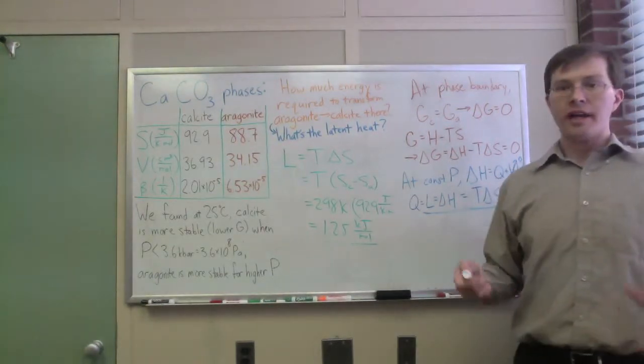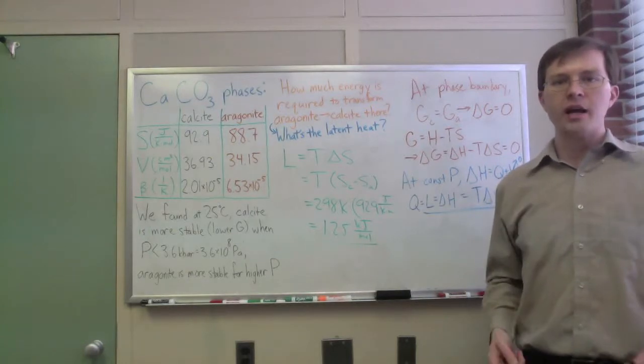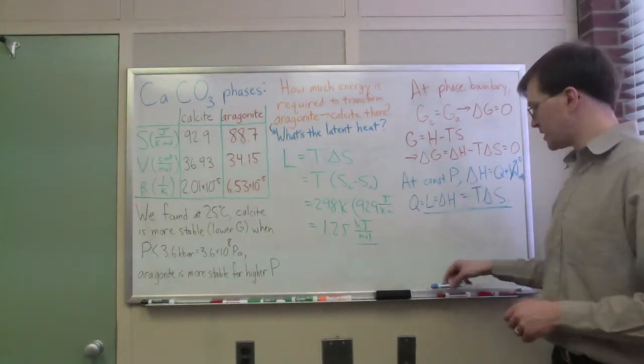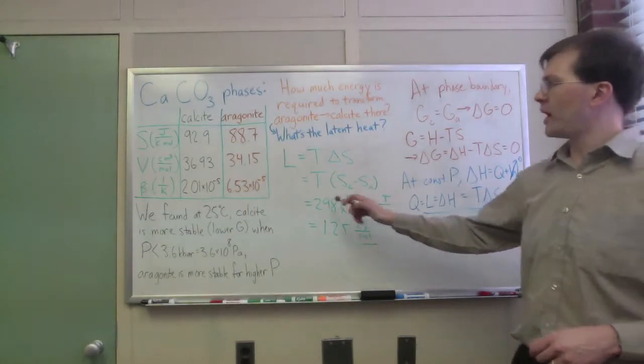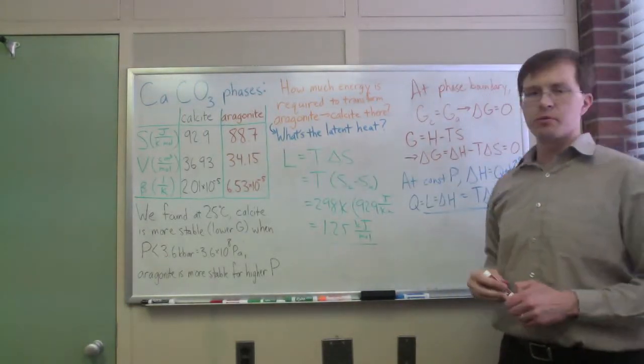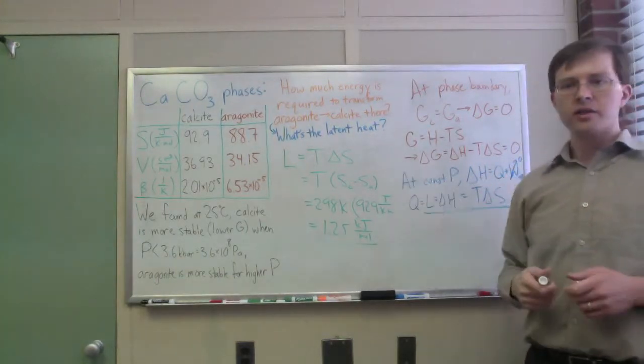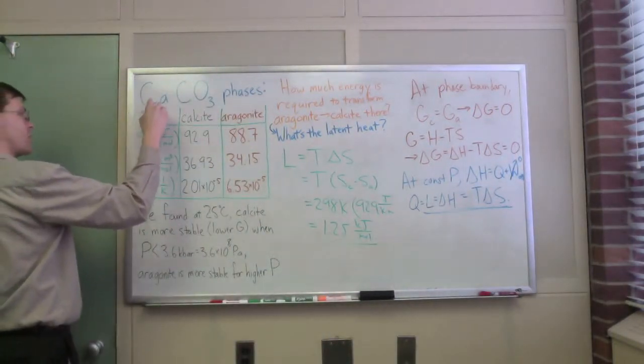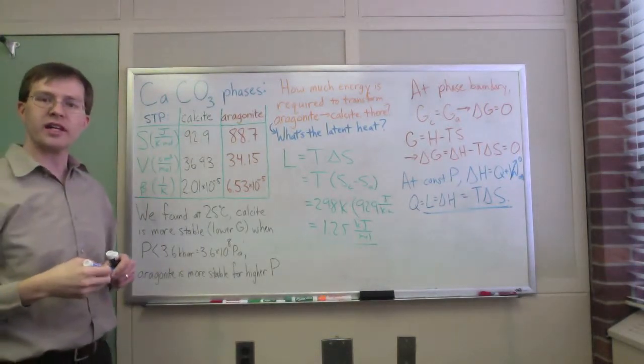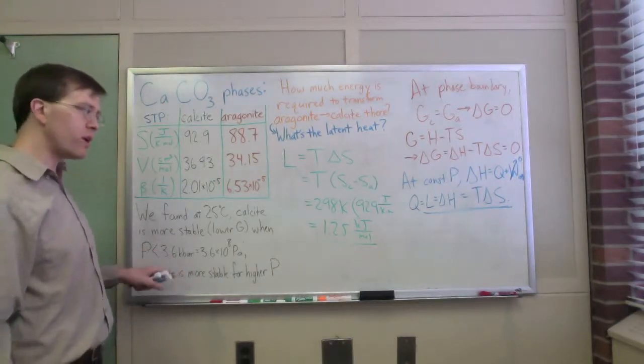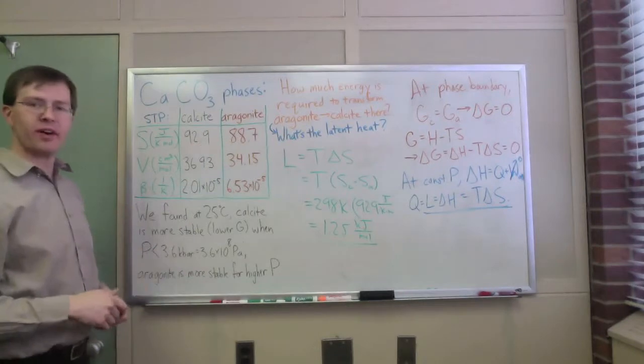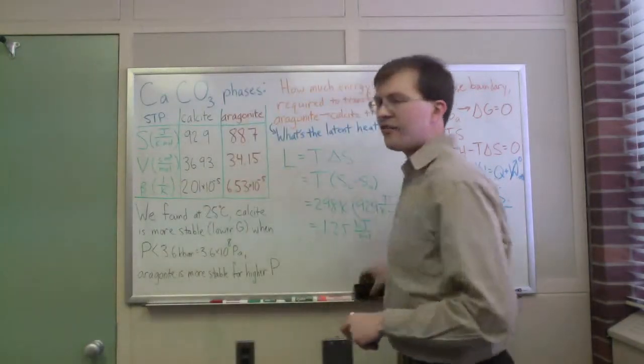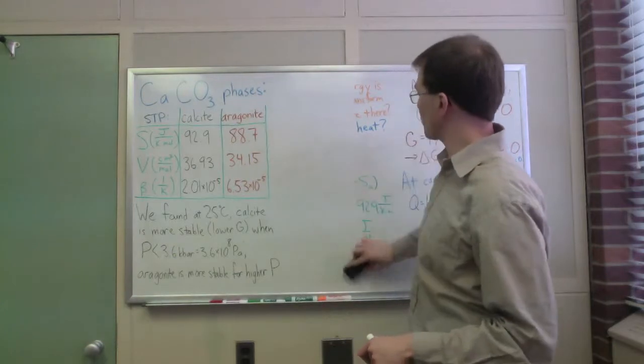We've reached a point where it's totally fair game to stop because we've explained this formula, but I want to say we have fibbed in doing this calculation. In particular, I fibbed right here where I took my 92.9 and 88.7 joules per Kelvin per mole entropy values. These entropy values were calculated at standard temperature and pressure, and we're totally not at standard pressure anymore—we're much higher. The question is, should these two entropy values have changed when we went up to 3.6 kilobars?